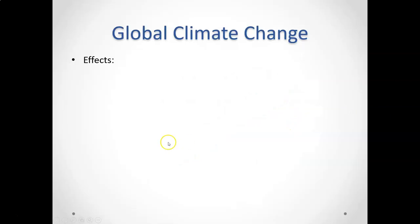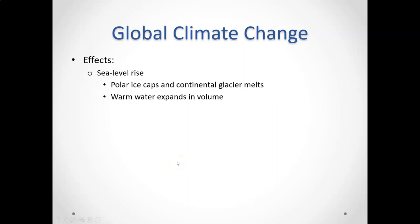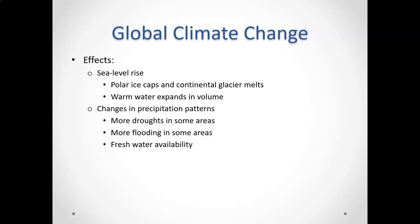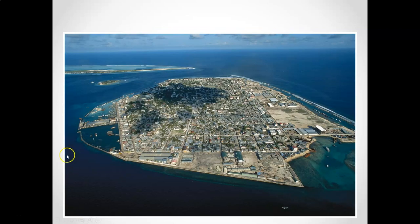As a result, sea levels are rising — water expands when it warms, and melting polar ice caps and continental glaciers are adding more water to the system. We see more droughts and more floods. Fresh water is becoming more scarce in areas with long-term droughts like parts of the desert Southwest. Entire island nations are at risk of being underwater in the very near future — nations built at sea level with nowhere to retreat to higher ground, whose entire nation as they know it could be wiped out.